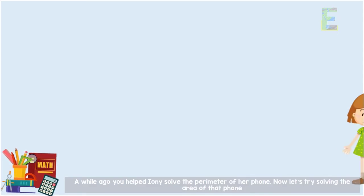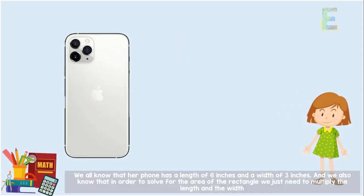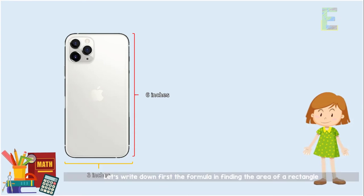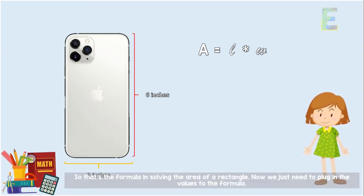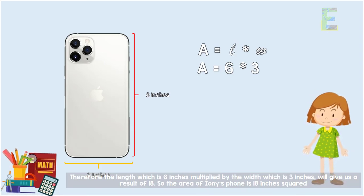Earlier, you helped Ayuni solve the perimeter of her phone. Now let's try solving the area of that phone. We know that her phone has a length of 6 inches and a width of 3 inches, and to find the area of a rectangle we just need to multiply the length and the width. So let's write down the formula: A equals L times W. Now we plug in the values — 6 inches multiplied by 3 inches gives us a result of 18. So the area of Ayuni's phone is 18 square inches.